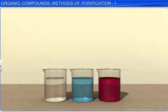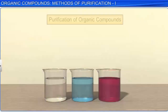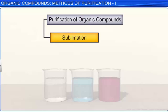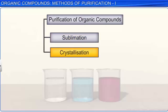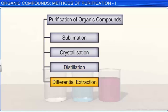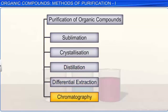Based on the nature of organic compounds and the impurities present in them, organic compounds can be purified using five different methods: sublimation, crystallization, distillation, differential extraction, and chromatography. In this module, we will look at the first three methods.